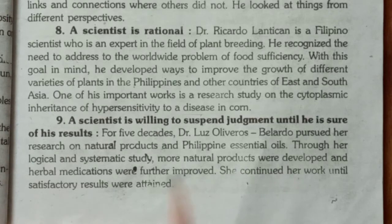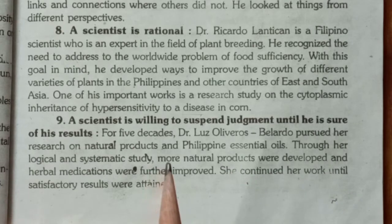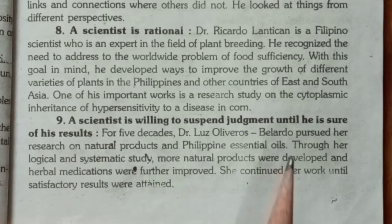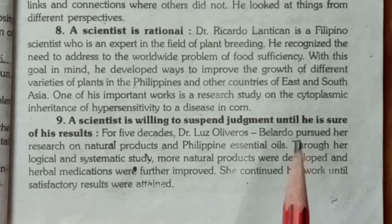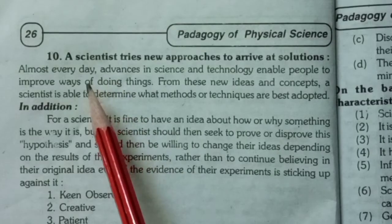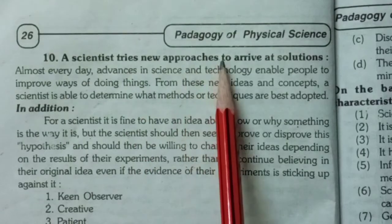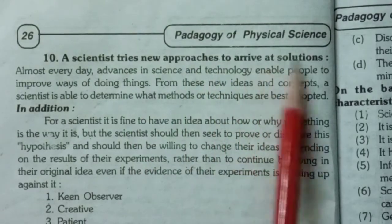Sometimes, whatever work has been carried out, a scientist will withhold from it — meaning he or she will suspend judgment and remain willing to do so until sure results are obtained. Then a scientist tries new approaches to arrive at solutions.